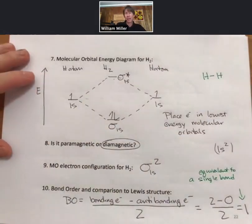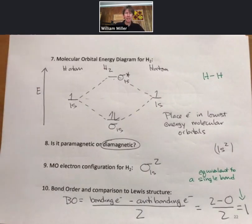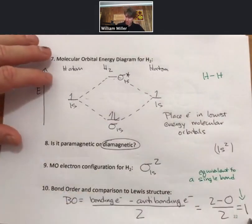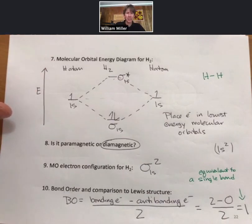A bond order of 1 is equivalent to a single bond, which is what we would predict from the Lewis structure. The vast majority of the time, Lewis structures and MO theory will agree — both give a single bond here. However, if there is a difference, it is molecular orbital theory that is correct, because it is 100% correct.